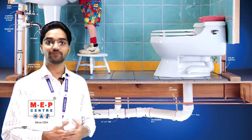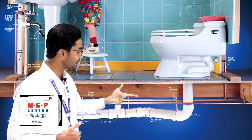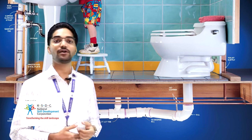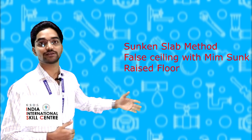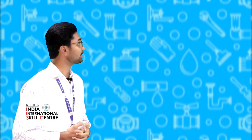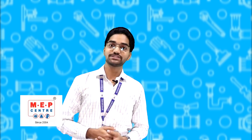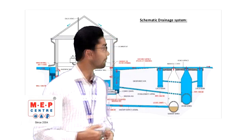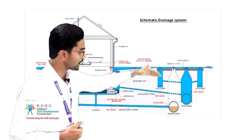To remove all wastewater, pipes must be run through the building. There are internal and external pipe routing methods. For internal routing, there are three processes: sunken slab, false ceiling with minimum sun, and raised floor. For external routing, there are one-pipe system, two-pipe system, and single stack system.